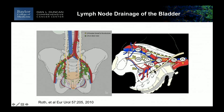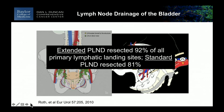In their definition of the extended template — which is simply up to where the ureter crosses over the common iliac artery — 92% of all lymph nodes in the study would be resected. If you started below the common iliacs, you'd drop down to 81%. A major point has also been made of dissecting the hypogastric nodes, because of the preponderance of lymph nodes in that region and the risk of metastatic disease. A very elegant study that, combined with other mapping studies, gives us healthy anatomic information.